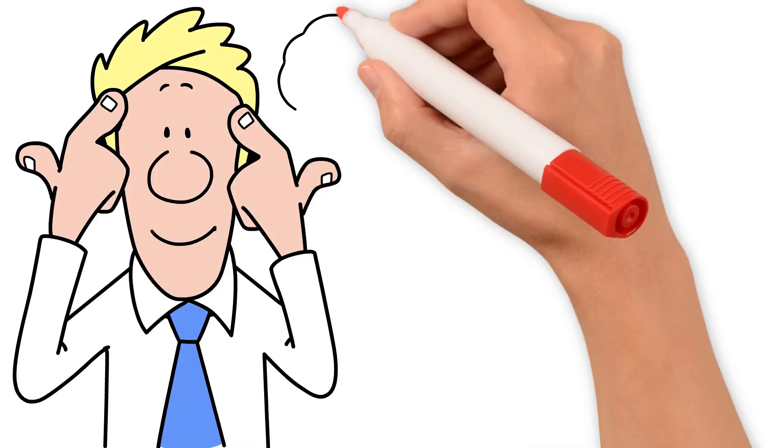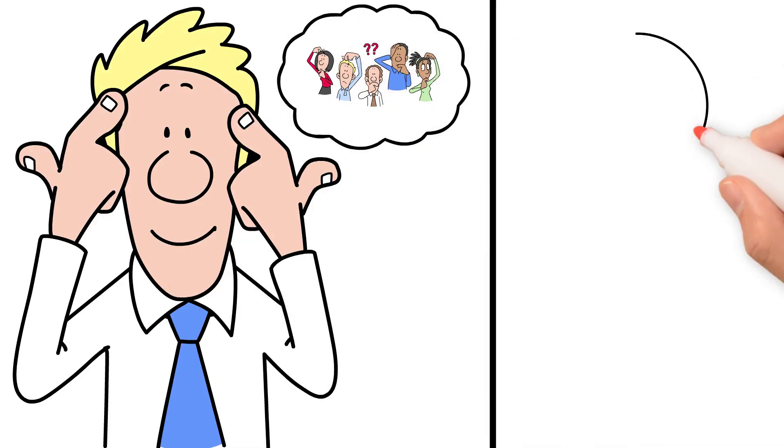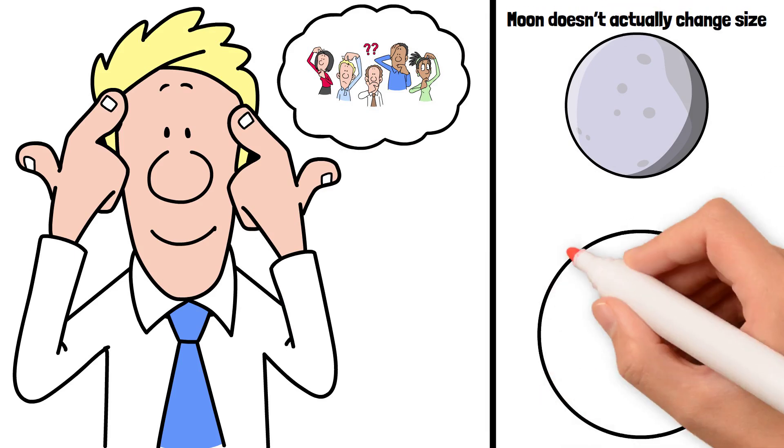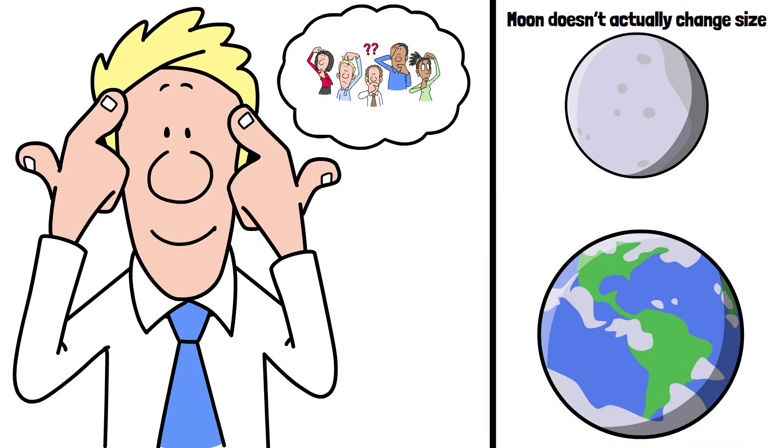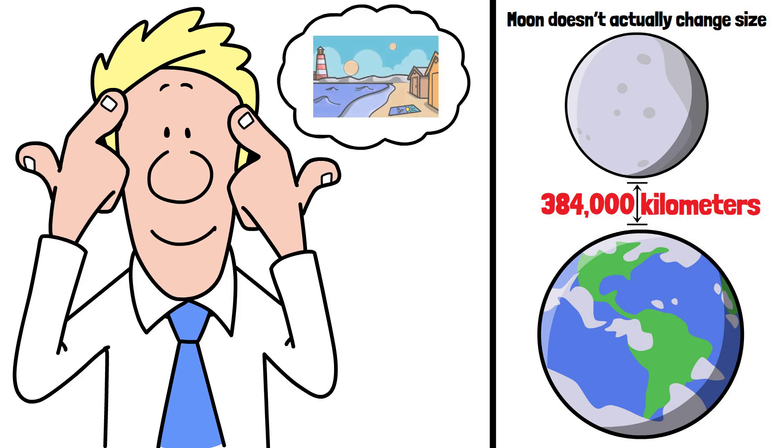First, let's clear up a common misconception. The moon doesn't actually change size, nor does it move significantly closer or farther from Earth during the night. Its average distance remains about 384,000 kilometers, whether it's on the horizon or high in the sky.